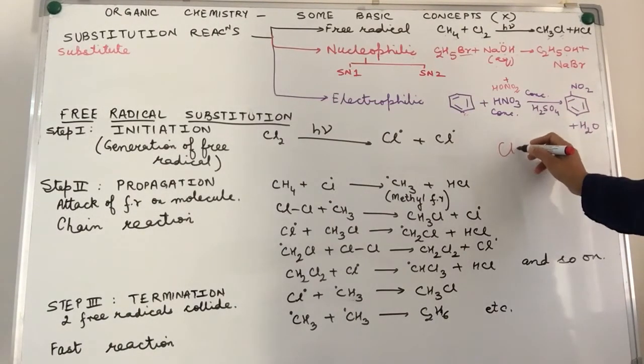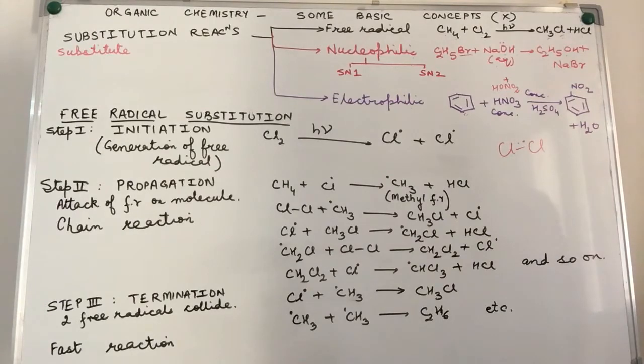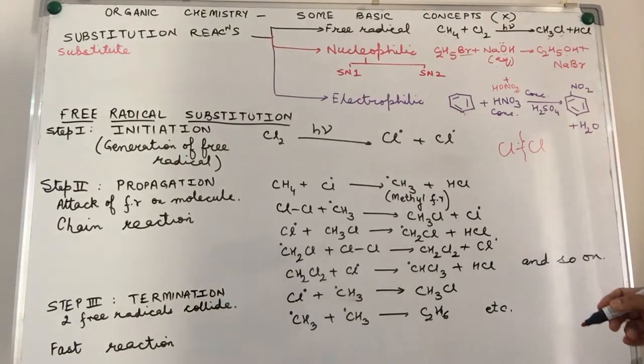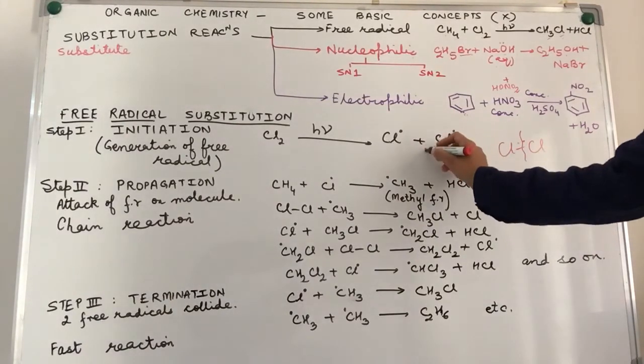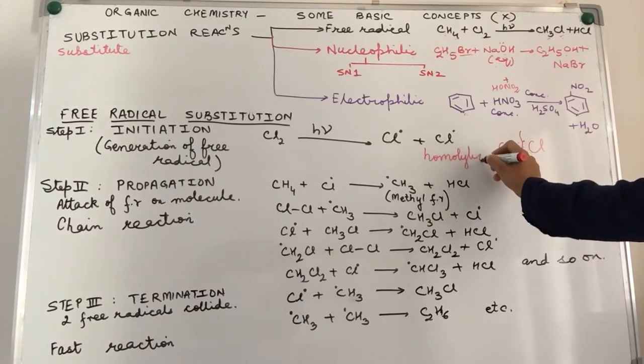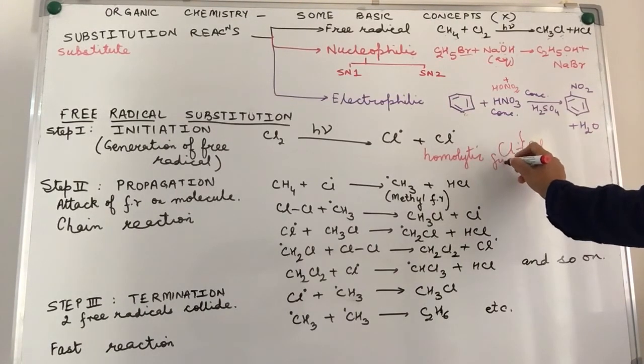Basically what is happening is the chlorine molecule, which is formed by sharing of electrons between chlorine atoms, breaks down by homolytic fission. So the type of fission that is happening in this particular step is homolytic fission because that is what is giving rise to free radicals.